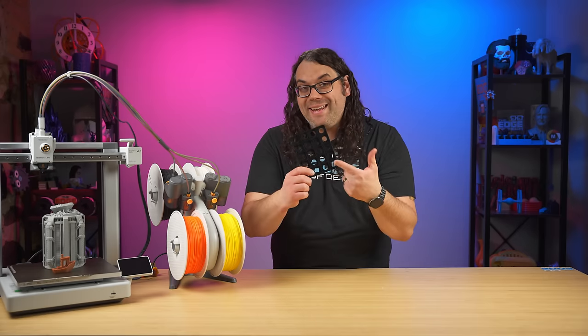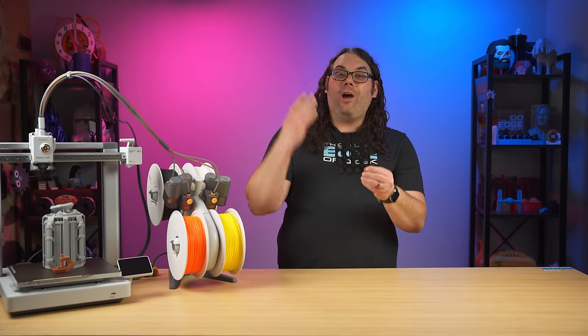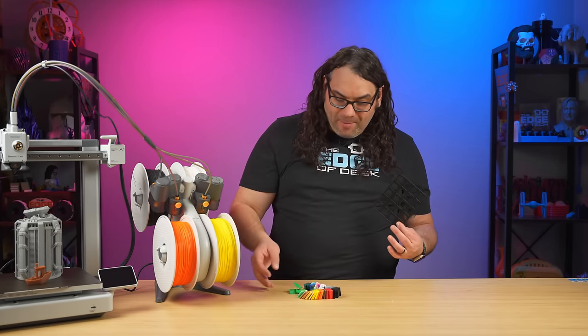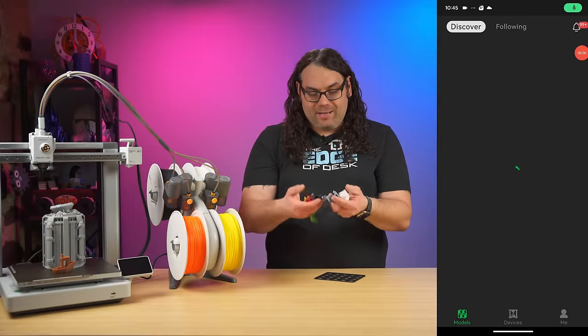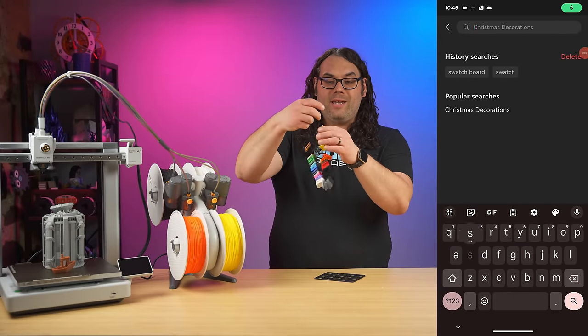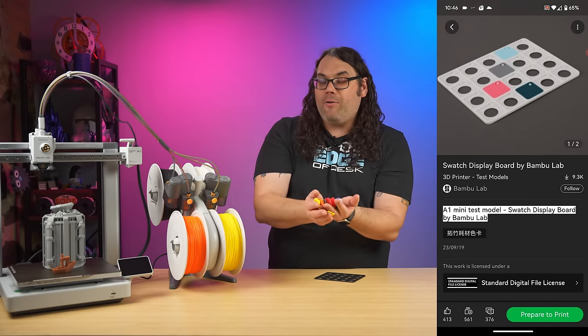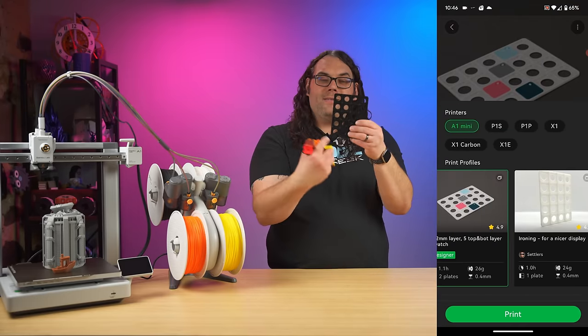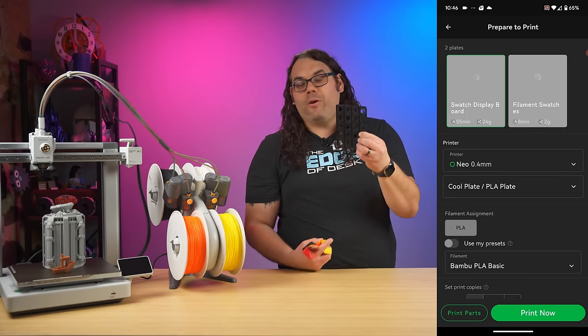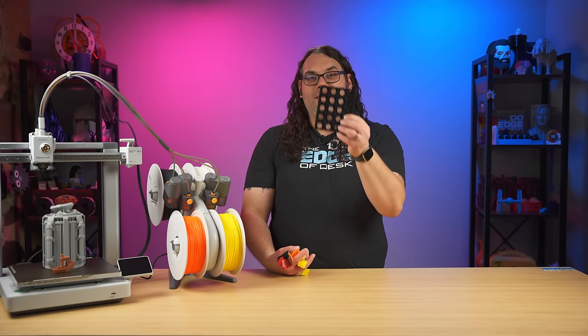The next thing I printed was this and it came straight from Maker World. I found the model and what this does is it holds the color swatches that you get in the box. This is almost all the colors in almost all the materials that they offer as far as Bamboo Lab filaments. I think this is a really cool idea because it gives you an idea of what each of the colors is. This actually allows you to organize them. They clip in and you're good to go.